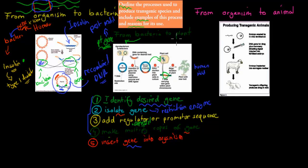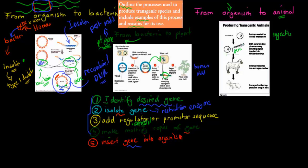If we want to grab any gene from any organism — bacteria, a plant, or an animal — and put it into an animal, we can use an injection. They literally inject the gene that we want after going through the four preparation steps. The fifth step, the insertion, is through injection. We inject it directly into the nucleus, they fuse and recombine, and then we put that nucleus into a sheep to produce our transgenic offspring.